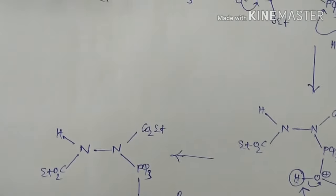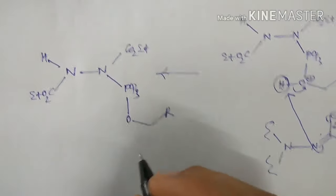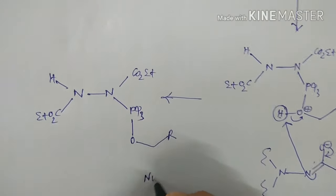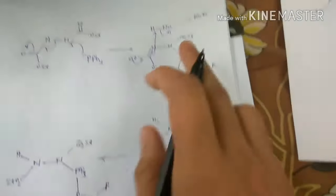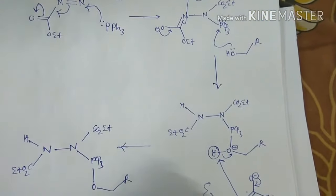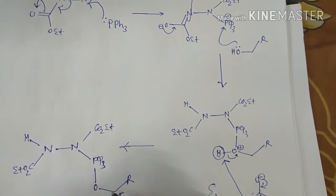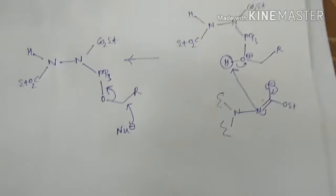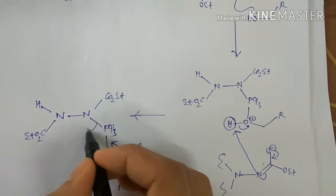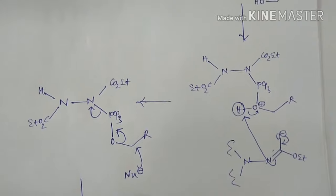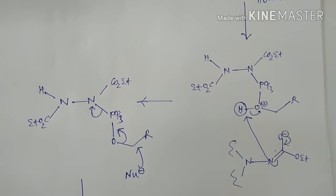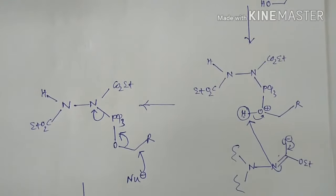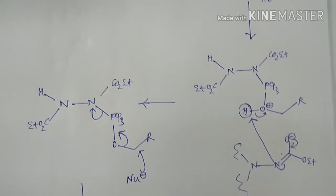So next, what will happen? The nucleophile — the NU minus which is generated here — can now attack in an SN2 fashion. And this leaving group will go like this, giving the product with N minus CO2Et, and then NHco2Et.